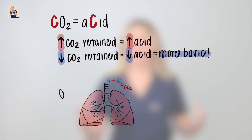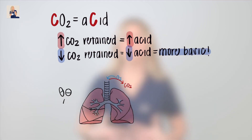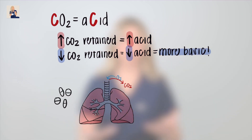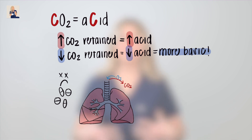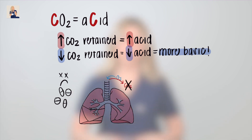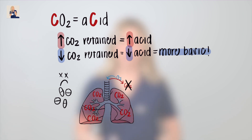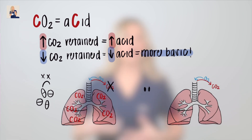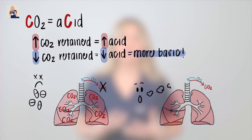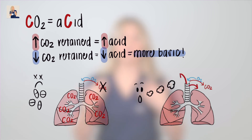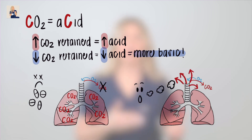You can also think of it this way: if I overdose on drugs, I am not breathing as much, which means I'm not expelling CO2 like normal. So CO2 builds up and I become acidic. And if I'm hyperventilating, I am breathing so much that CO2 is leaving my body, so I am alkalotic.